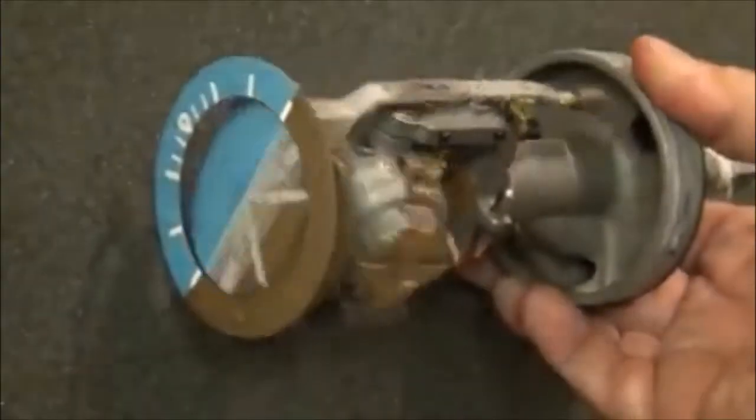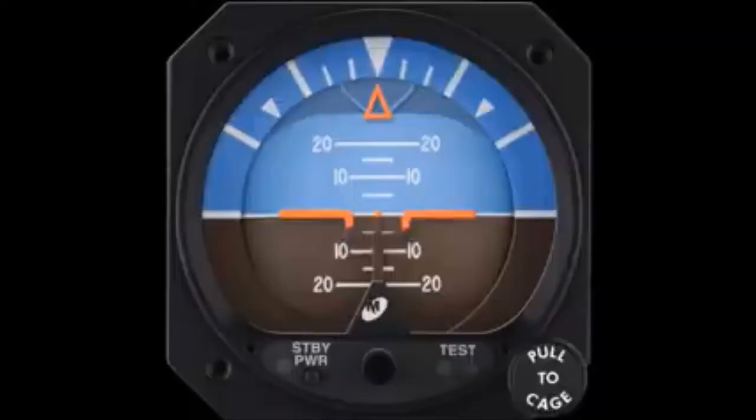The attitude indicator, otherwise known as the artificial horizon, is the one single instrument on your aircraft that not only shows both pitch and bank information, but does this instantaneously and very accurately. With the traditional round gauge or steam gauge as we call it, this instrument will be a gyro-driven instrument. It may be powered by DC electric or AC electric by using an inverter, but typically, especially in training aircraft, this instrument is vacuum or pressure-driven.